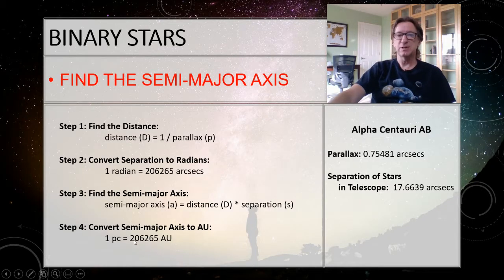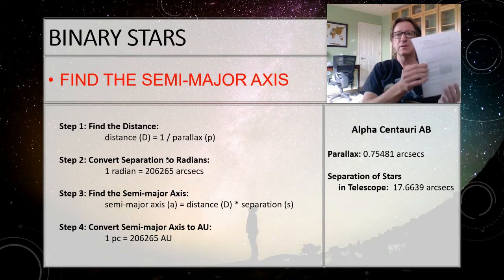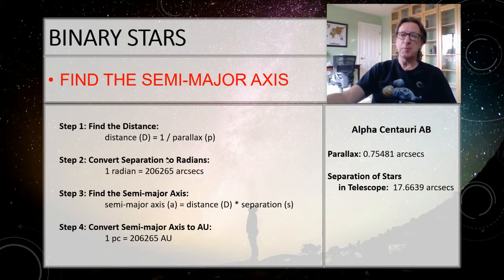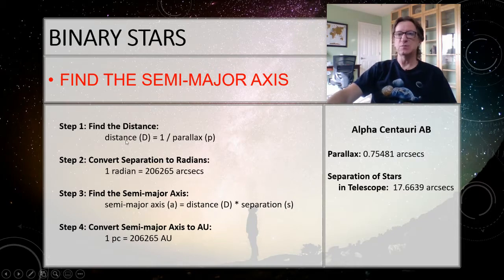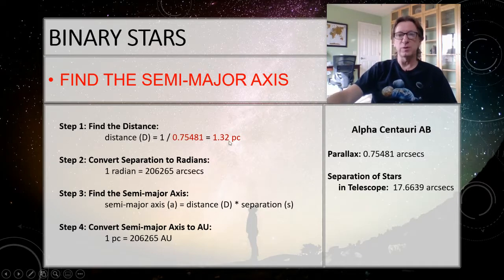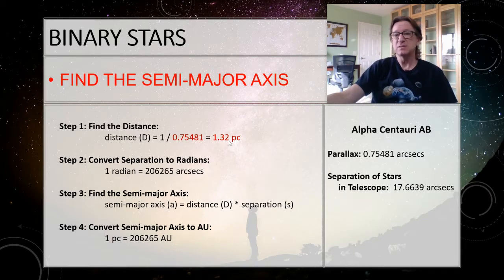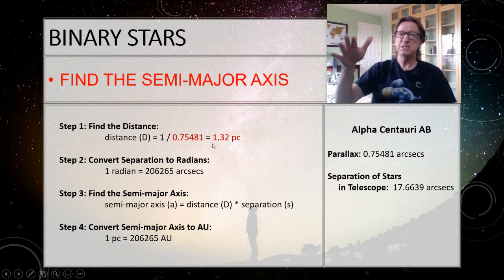Step 1: find the distance. Using the finding-distance tool, take 1 divided by the parallax: 1 ÷ 0.75481 = 1.32 parsecs. That's how far away Alpha Centauri is. That makes sense — each parsec is about one star system over, and Alpha Centauri is our closest star system, so it should be close to 1 parsec.